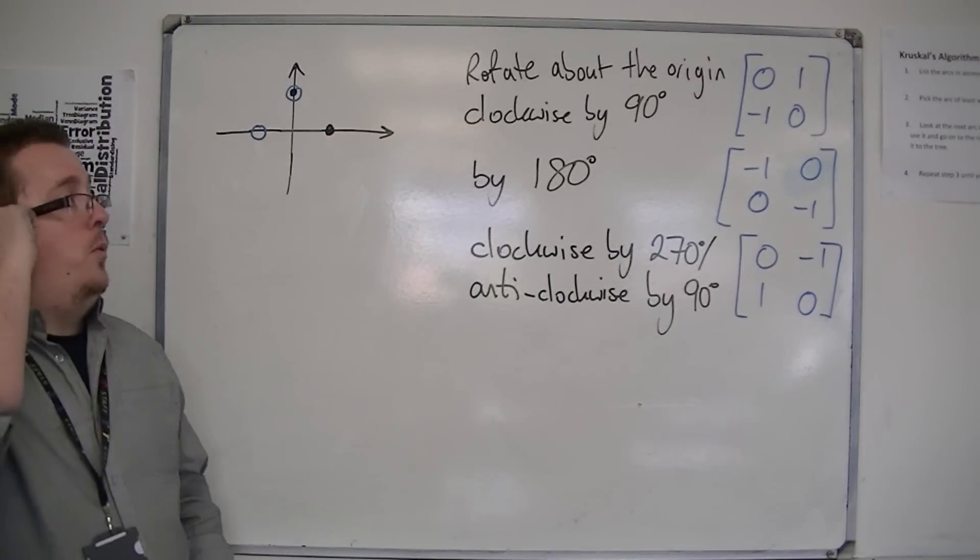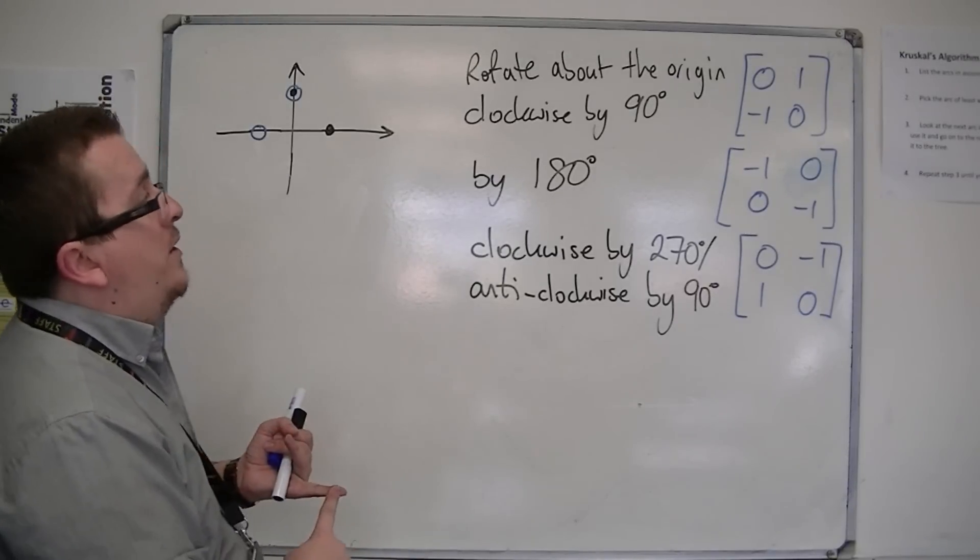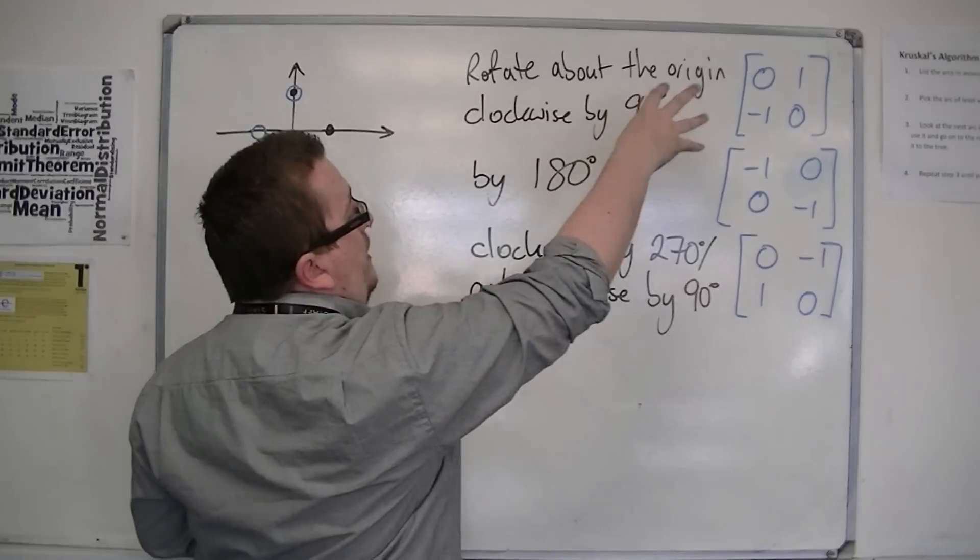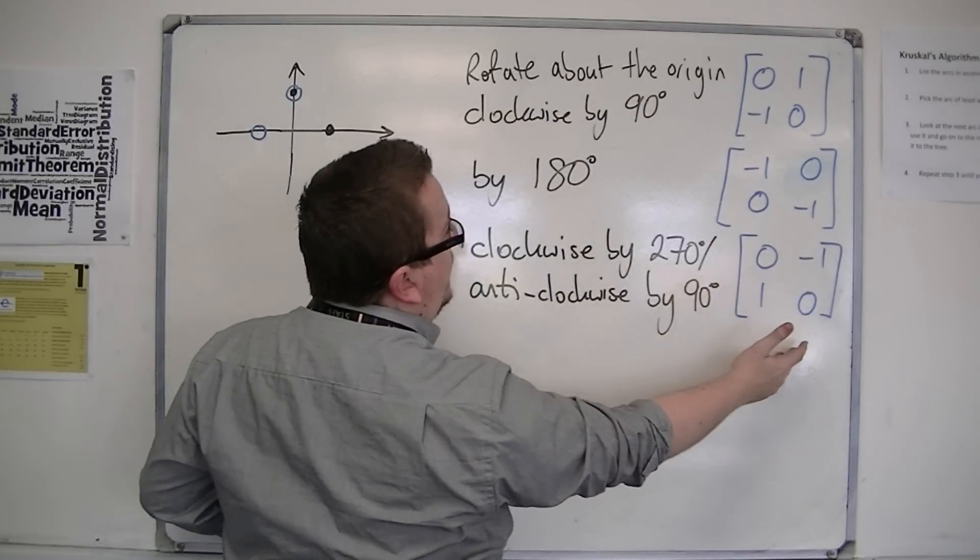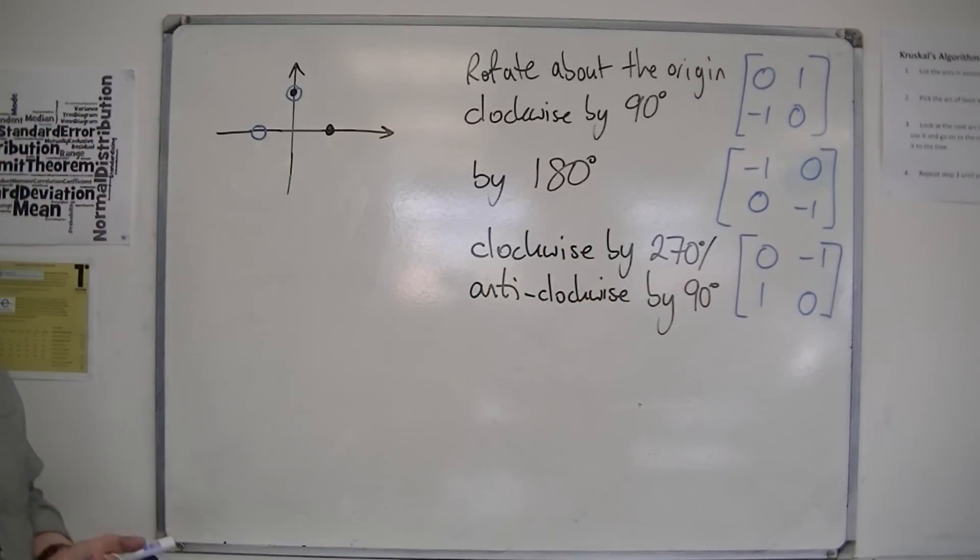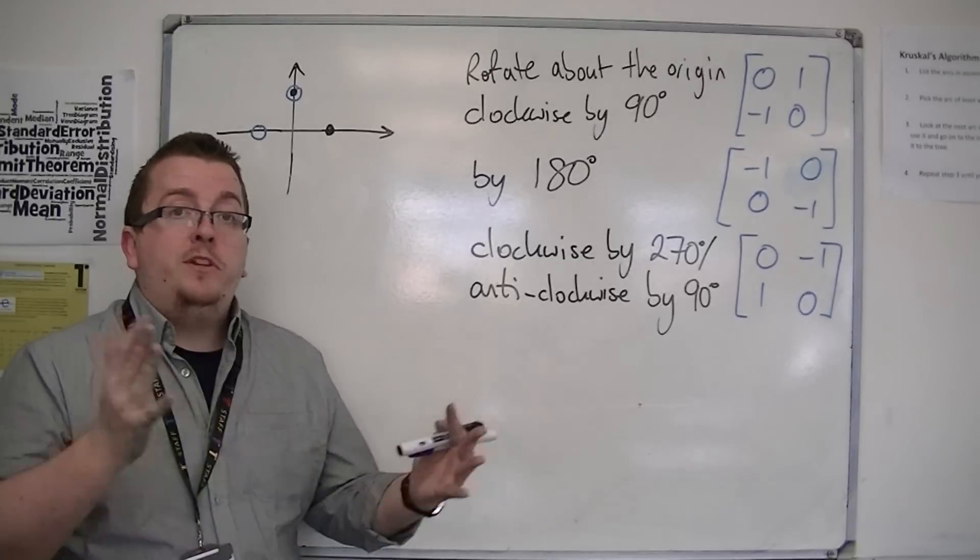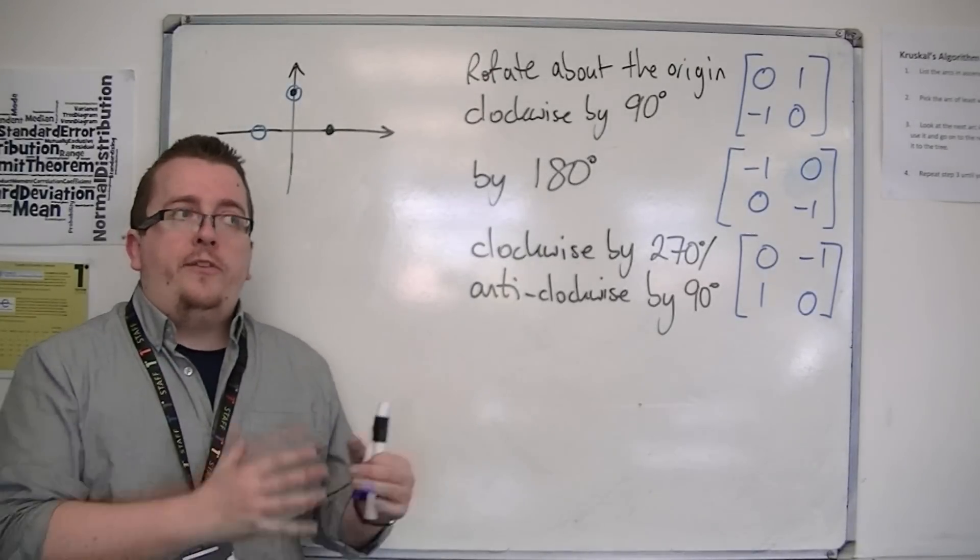So what we have here is the beginnings of some rotations. I can rotate now by 90 degrees, clockwise or anticlockwise. I can rotate round by 180 degrees. But what if I want to rotate round by 45 degrees, or by 60 degrees?